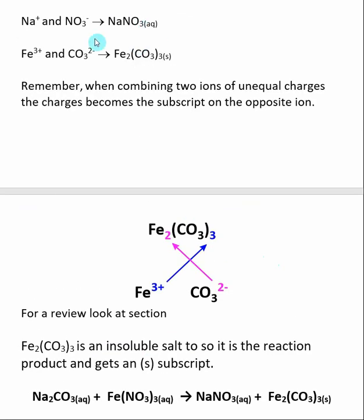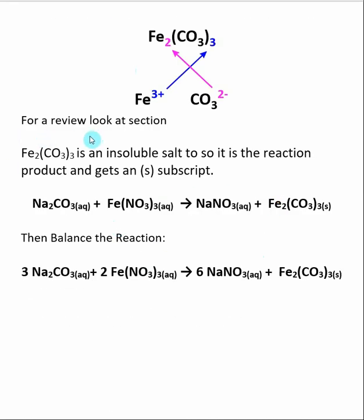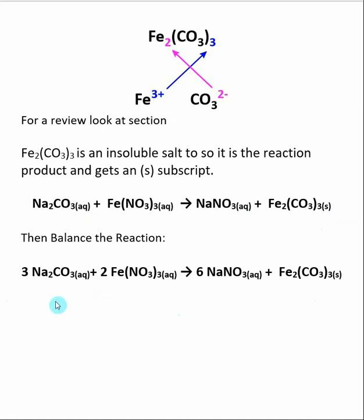Now that we know our two products are sodium nitrate and iron(III) carbonate, we determine which is the solid. Sodium nitrate is listed in group 1 as being soluble. Iron(III) carbonate is listed as insoluble, so iron(III) carbonate is our solid — it gets subscript (s). Everything else is considered soluble and gets subscript (aq). The final step is to balance the reaction, as we have done in previous sections. Here is the balanced reaction that occurs when we mix aqueous solutions of sodium carbonate and iron(III) nitrate.